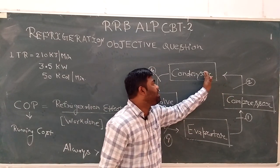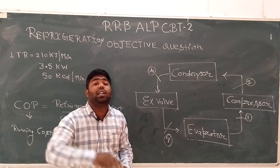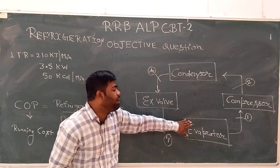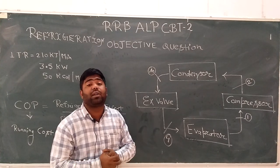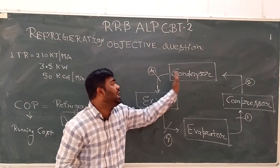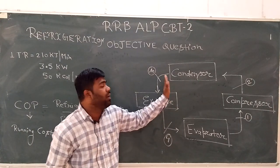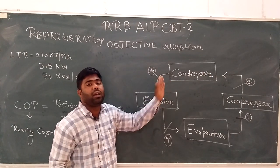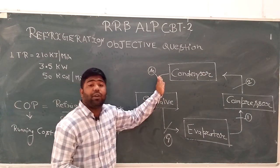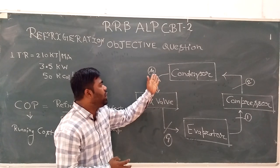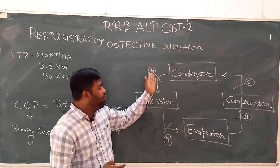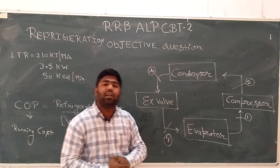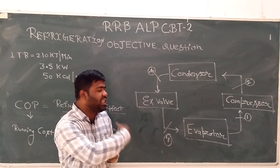The superheated vapor goes to the condenser, which converts it to liquid. The condenser does phase change: vapor to liquid — completely liquid. That liquid refrigerant then goes to the expansion valve, and from there into the evaporator. These cycles keep running.